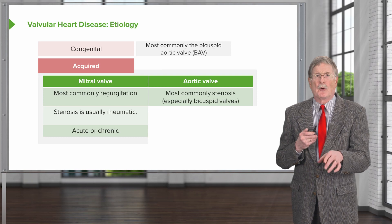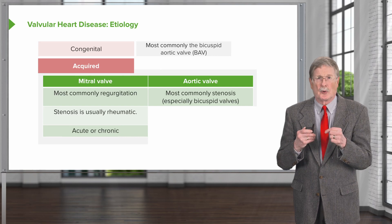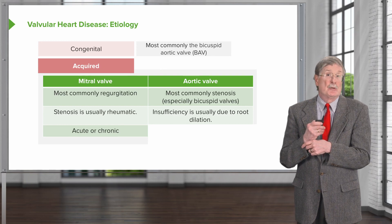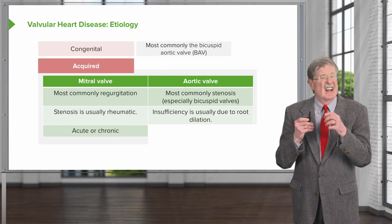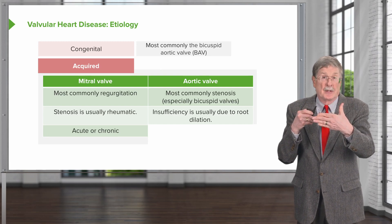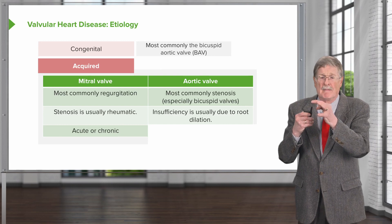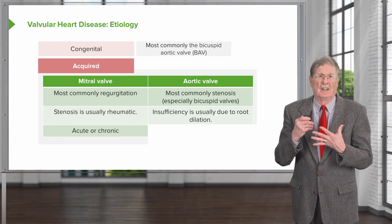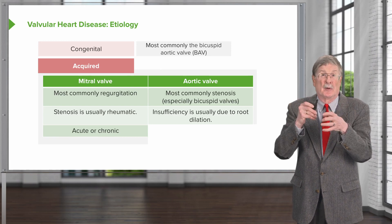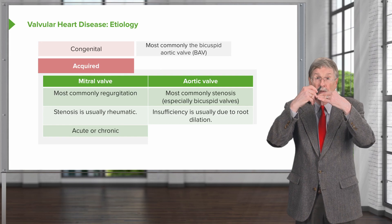Especially in bicuspid valves, the aortic valve can develop regurgitation or insufficiency, but more commonly it's going to become fibrotic and calcified, and therefore stenotic. Insufficiency is usually due to dilation of the root — so it's not necessarily even the valve itself. The annulus of the semilunar valves, the aortic and pulmonic valves, are also very important in maintaining valve integrity. If you have dilation of that root because of connective tissue disorders or dilation of the aorta for any particular reason, then you will have the annulus pull apart and the leaflets won't be able to close appropriately.